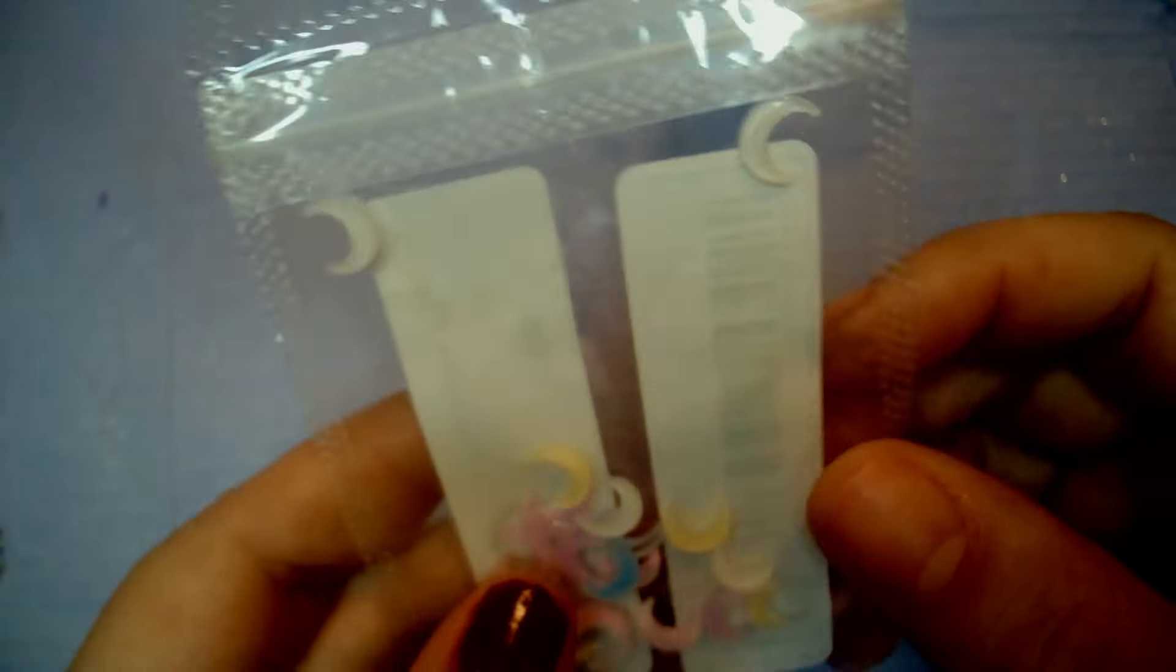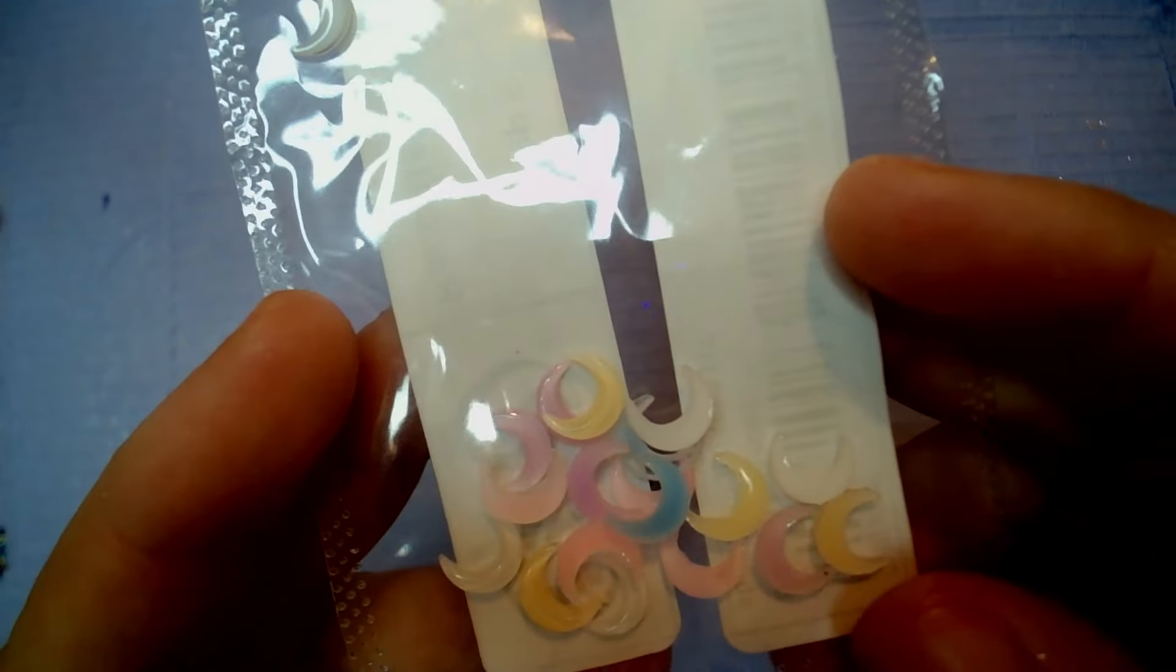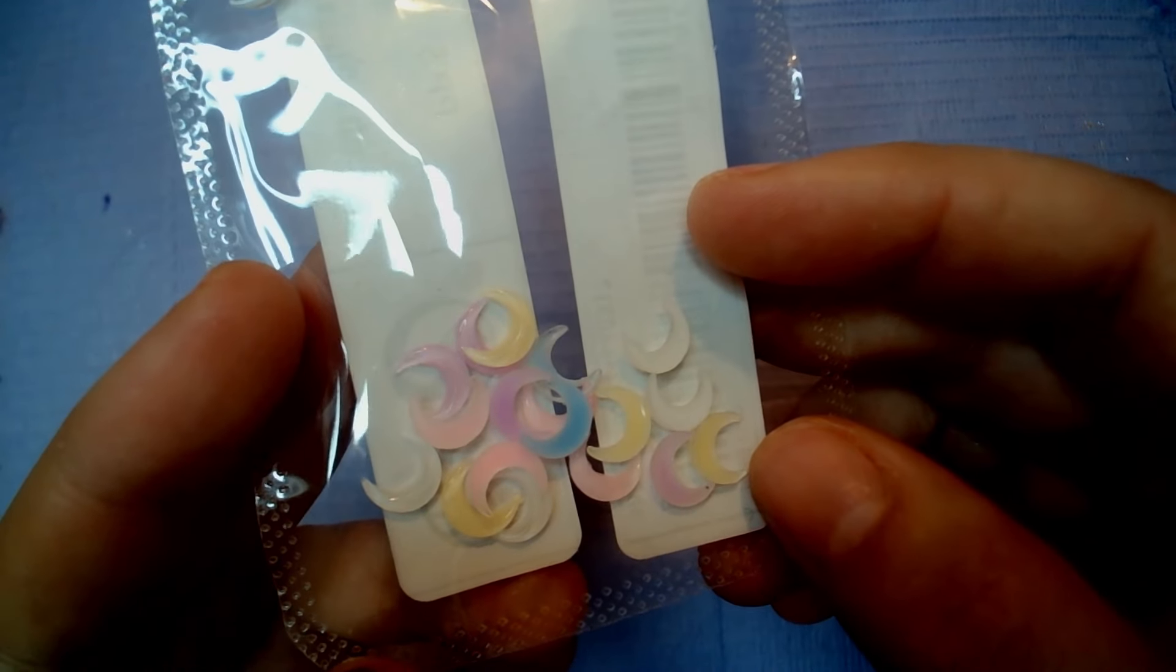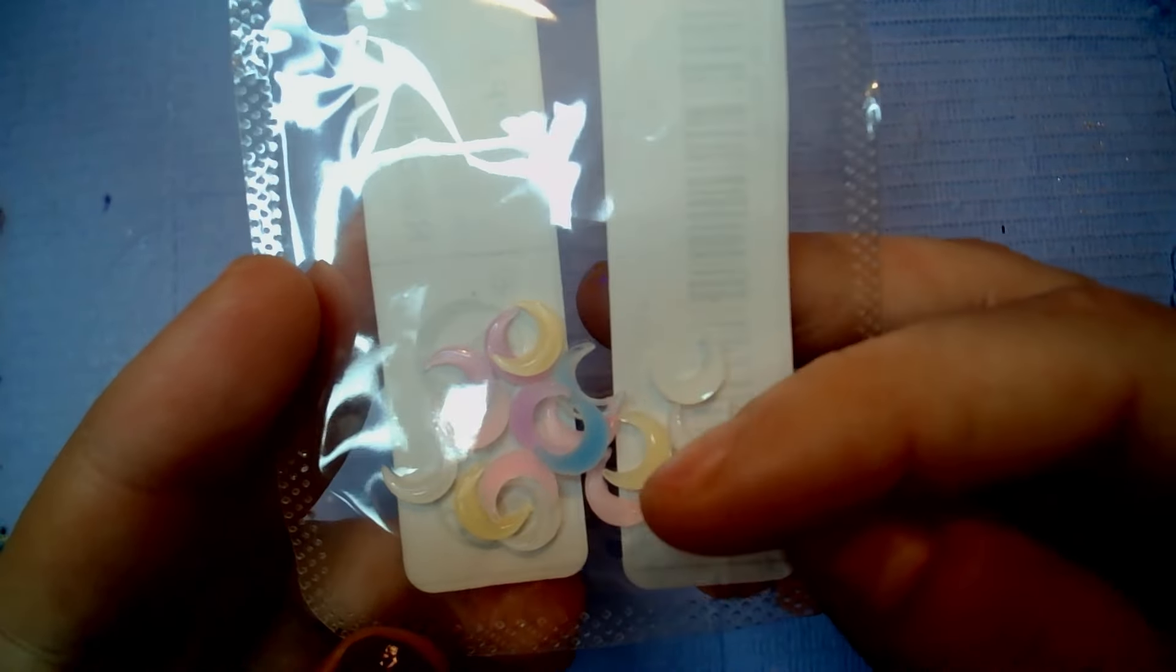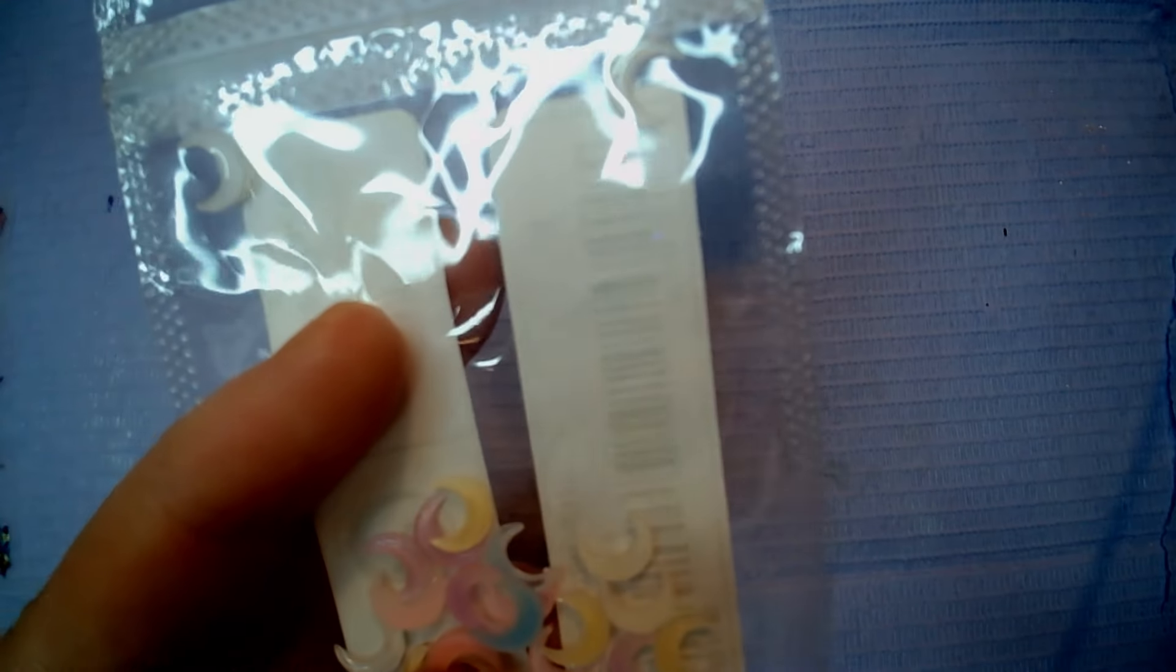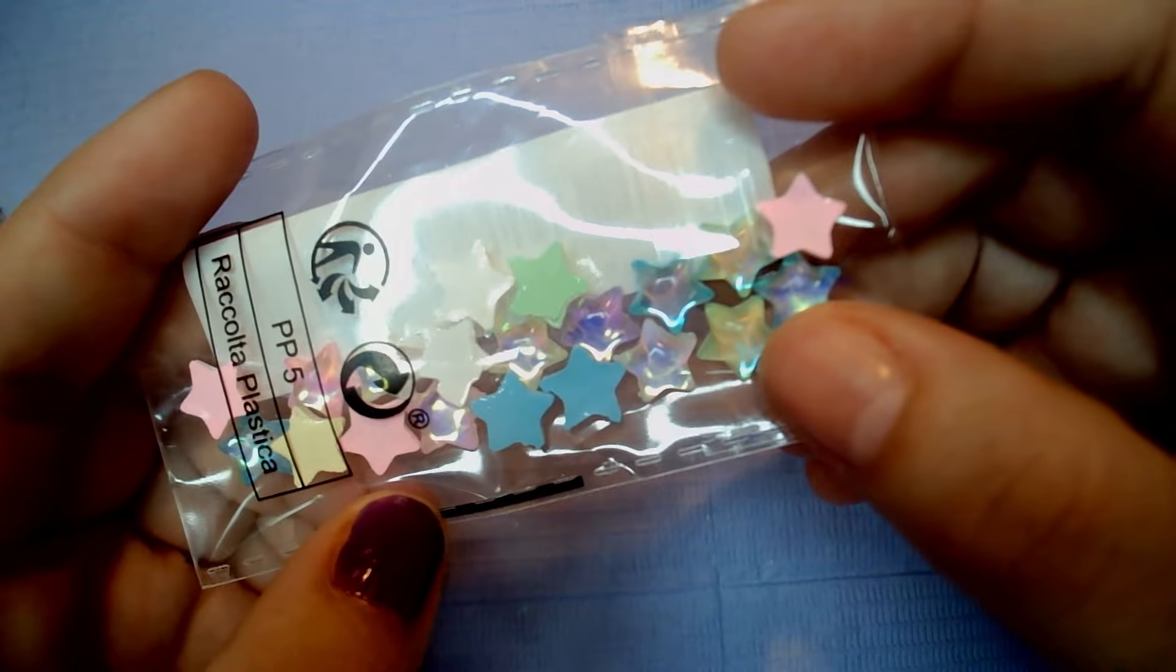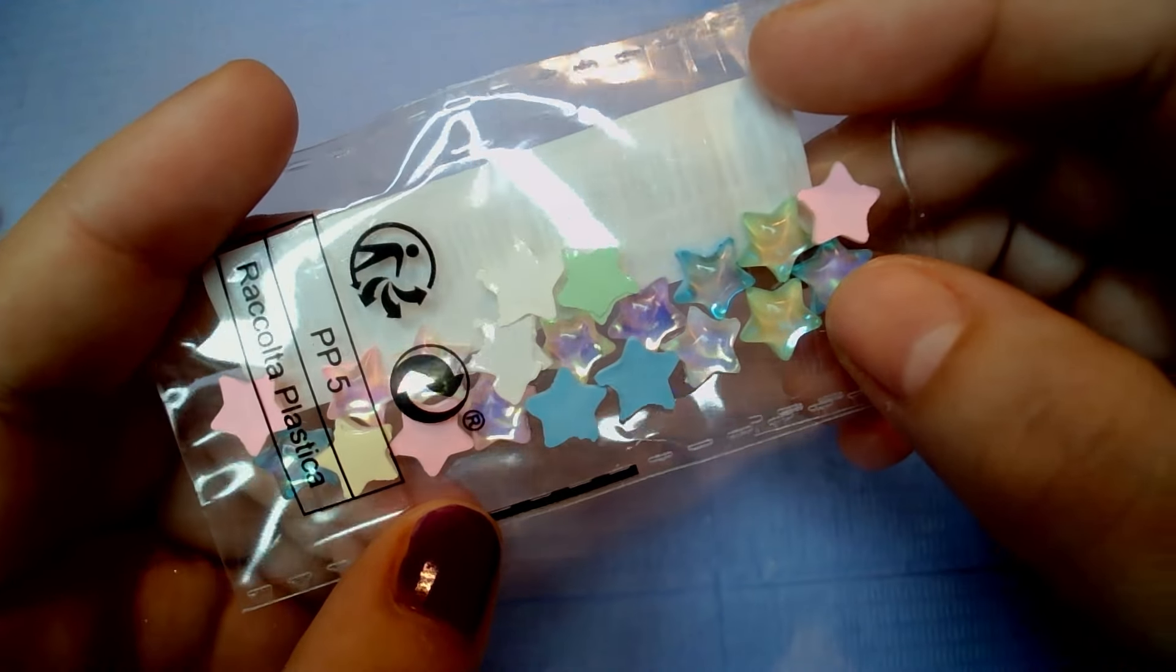Then I also got these resin moons. Which are a bit bigger. In nice pastel colours. And they come in the white and the pink. And then to go with these moons. I bought these. Aurora pastel star charms. To go with them.